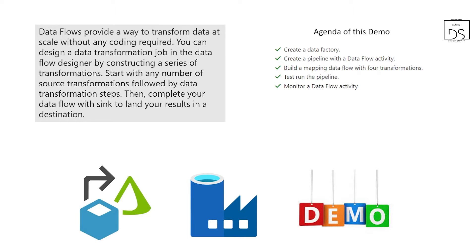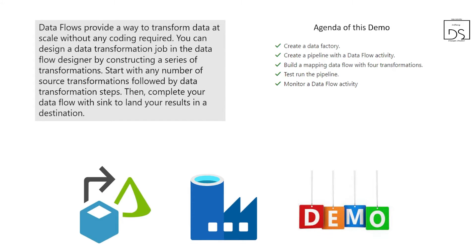We can design data transformation jobs using the data flow designer UI, constructing a series of transformation activities and steps. We can have source transformation, sink, and in between we can have many different actions such as filter, aggregate, and more. For this demo we are going to create a data factory, upload a mobile-related dataset, create a pipeline with a data flow activity, add source, destination, and transformation, then run, monitor, and see the output.